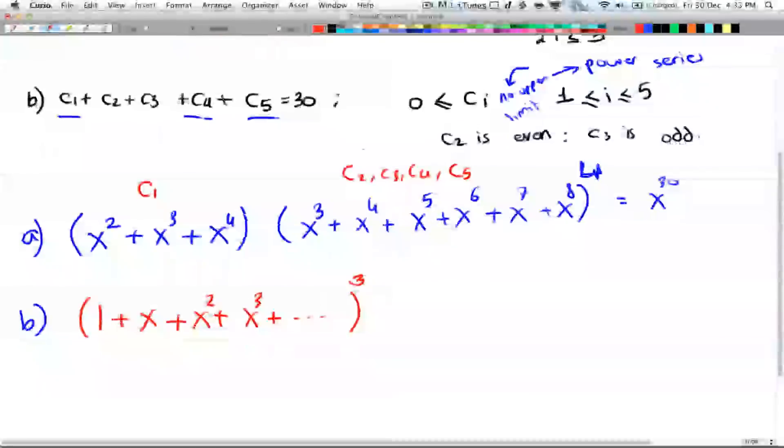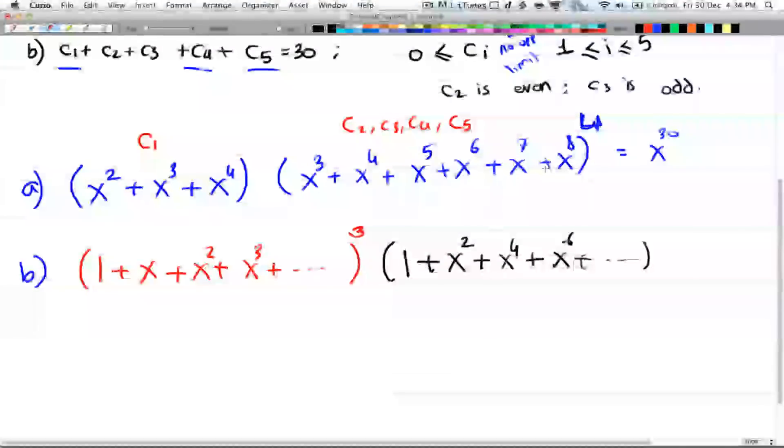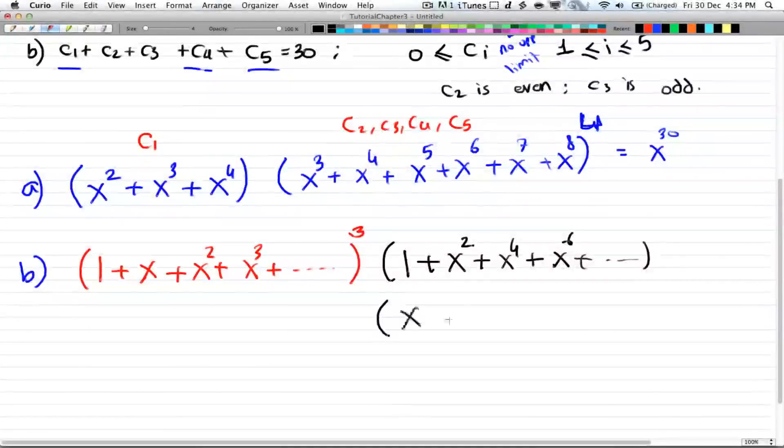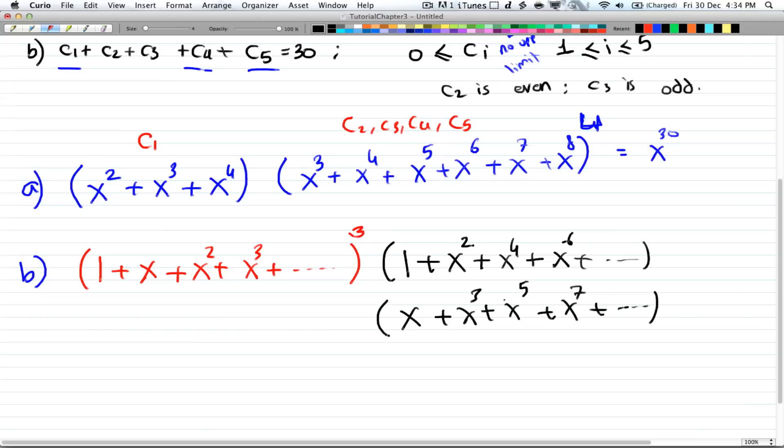Okay, now we have to do C₂ and C₃. Well, C₂ is even, so you can only have even numbers. So you can select it, x squared, so actually 1, because x to the 0 is even, plus x squared, plus x to the 4th. So you can select it 0 times, 2, 4 times, 6 times, and all the way to infinity as long as it's even. So that's C₂, and C₃ is odd. So you can select it once, or 3 times, or 5 times, or 7 times, and so on, to infinity. And this is generating functions. And also this is equal to x to the power of 30.